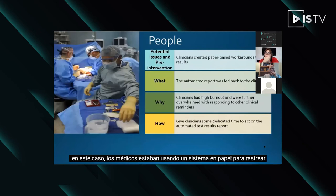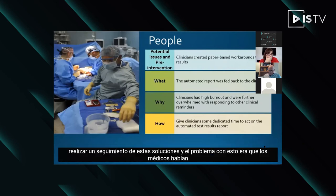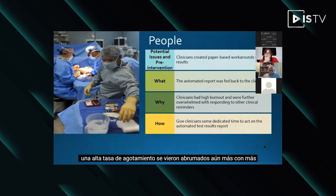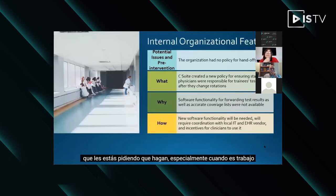The next part of the model is the people. Clinicians were using a paper-based system to track their results, which is not ideal in a computerized hospital. We wanted to create an automated report fed back to clinicians to help them keep track during work rounds. The problem was clinicians had a high burnout rate and were further overwhelmed with more work added without removing any existing work. We really just added work to the system. The lesson: you need to have dedicated time for the clinicians to do the work you're asking them to do, especially when it's needed.